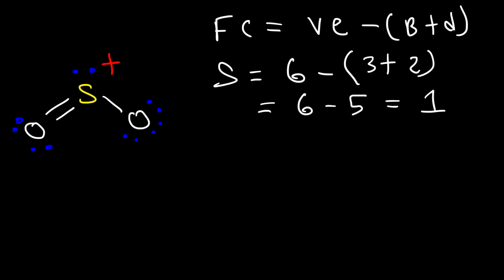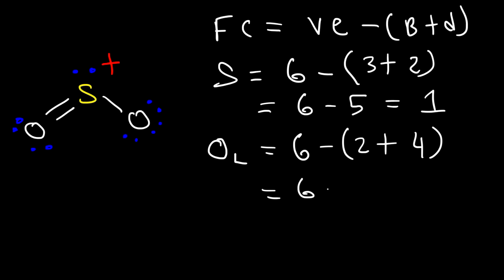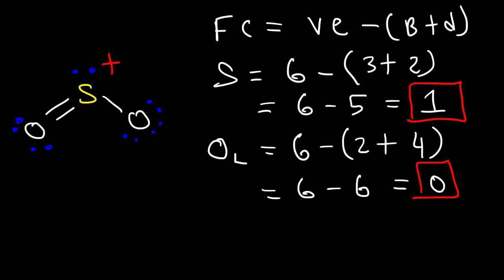Now let's move on to the oxygen atom on the left. Oxygen and sulfur are both chalcogens — they're in the same group of the periodic table, so they both have six valence electrons. But in this structure, oxygen only has two bonds and four dots (two lone pairs). Two plus four is six, and six minus six is zero. So the formal charge on the left oxygen is zero.